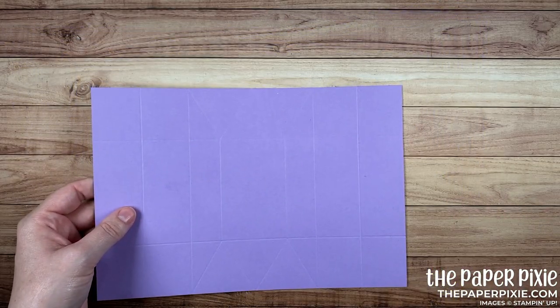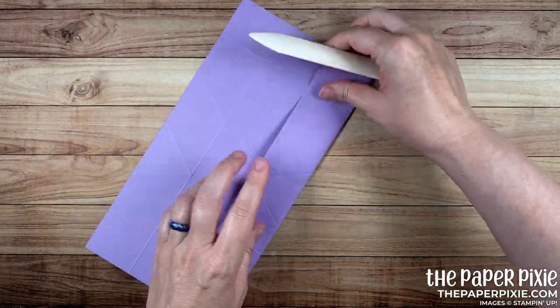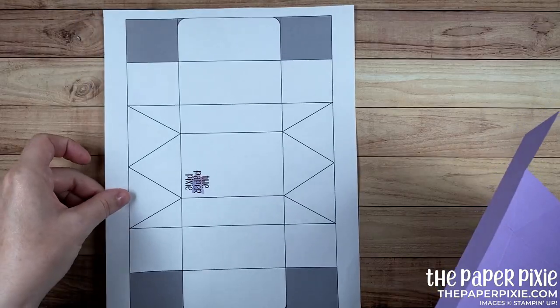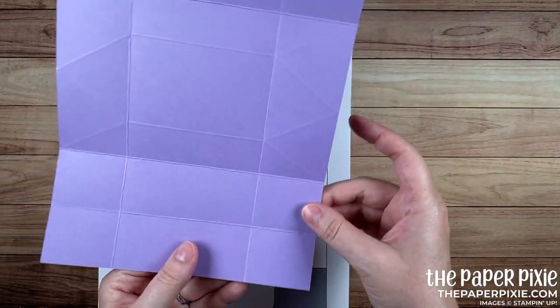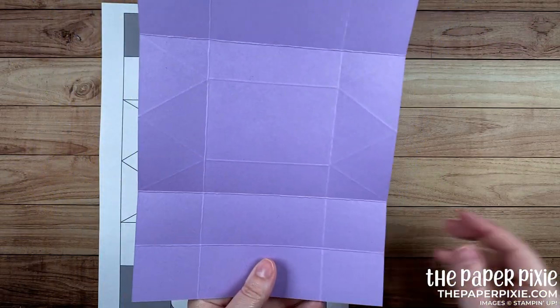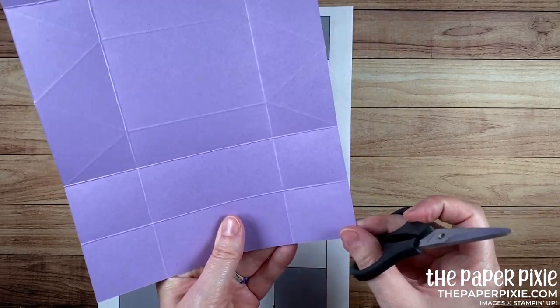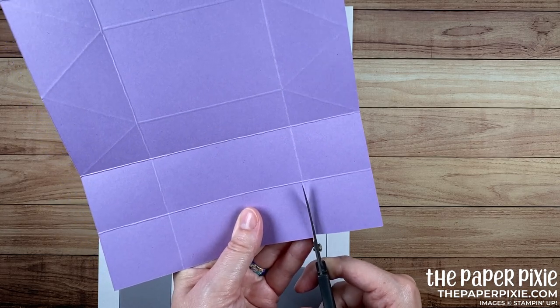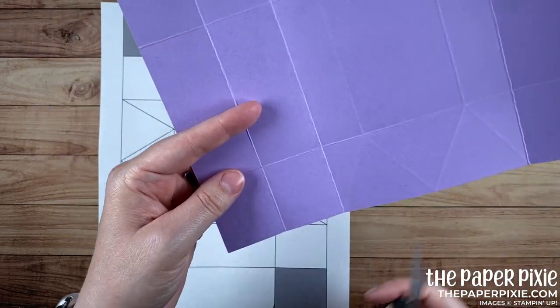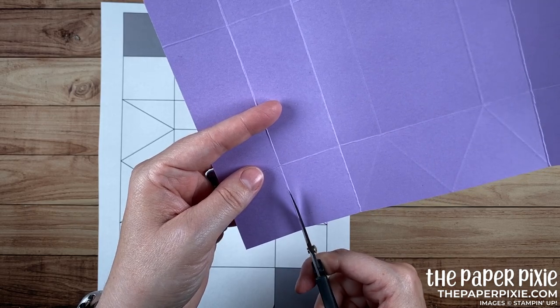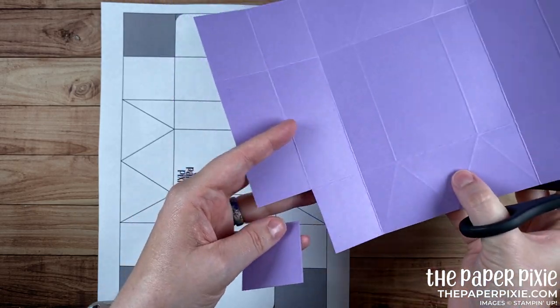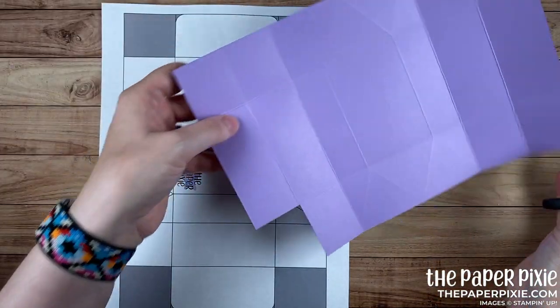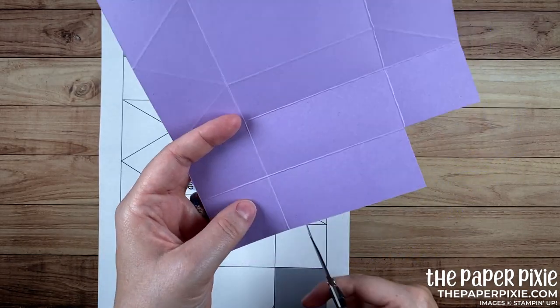All right next I'm going to fold and burnish on all the score lines that go all the way across the cardstock. And then bringing back our template again we're actually going to come in and remove these corner sections and I'm actually going to remove the score lines completely. So I'm just going to cut just to the left of the score line here and then just to the right of the score line here to remove that corner. So you'll see we've got those score lines are left on the piece we removed and I'm going to repeat that in all four corner sections.